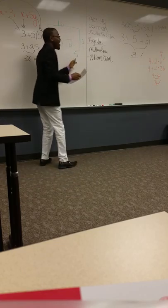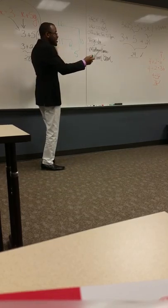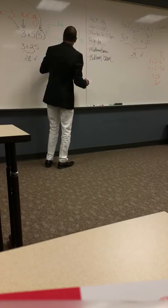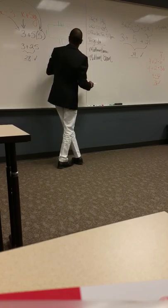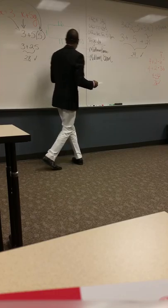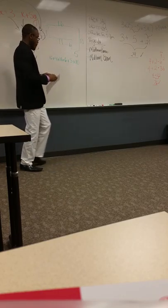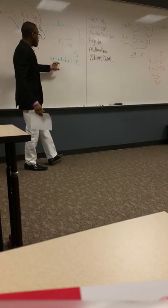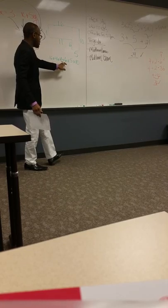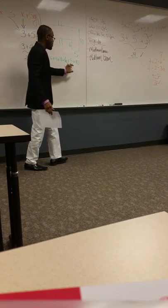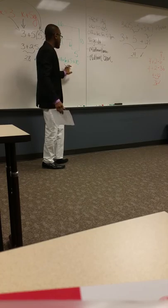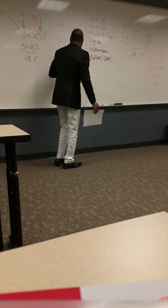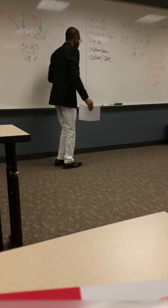So now I do the distance around: 16 plus 4 plus 11 plus 6 plus 5 plus 10. So 16 plus 4 is 20, plus 11 is 31, plus 6 is 37, plus 5 is 42, plus 10 is 52. So my answer is 52 centimeters — that's my perimeter.